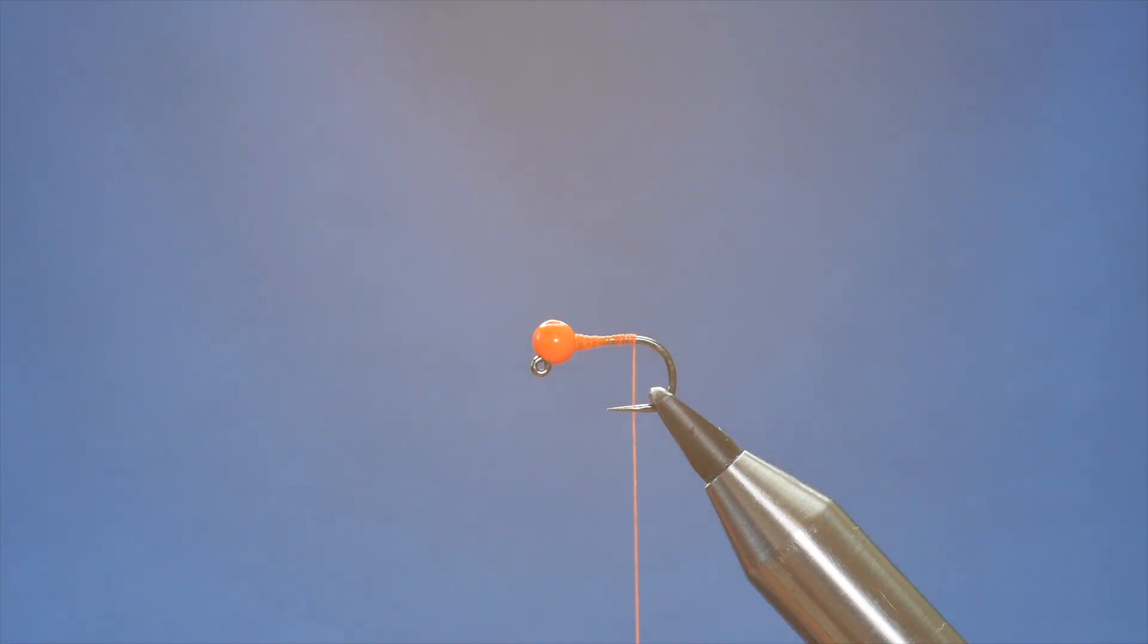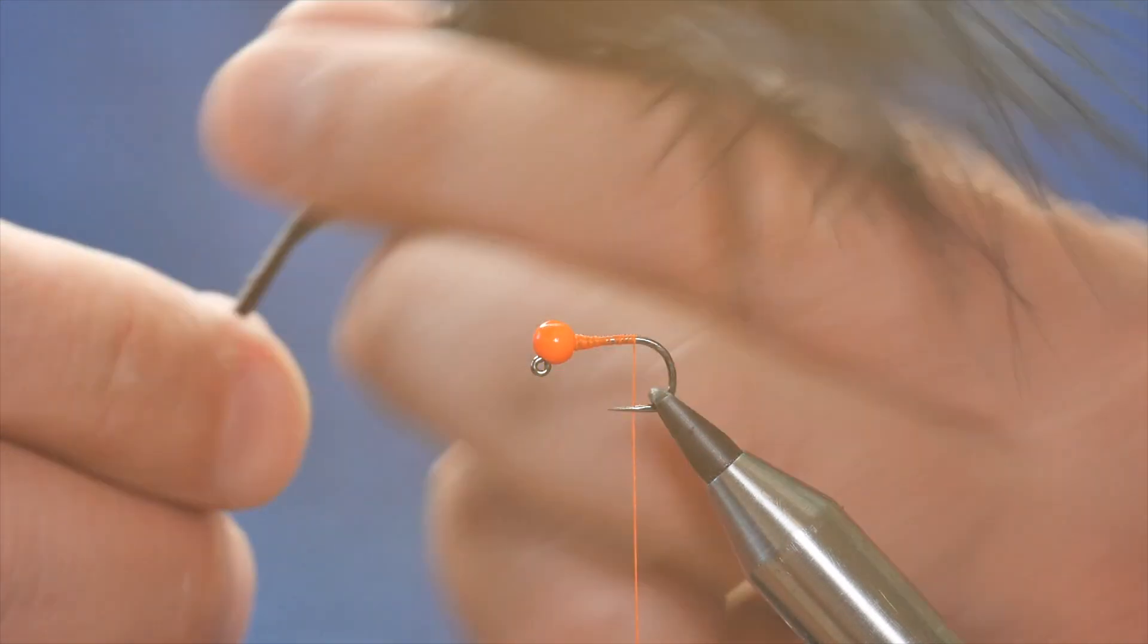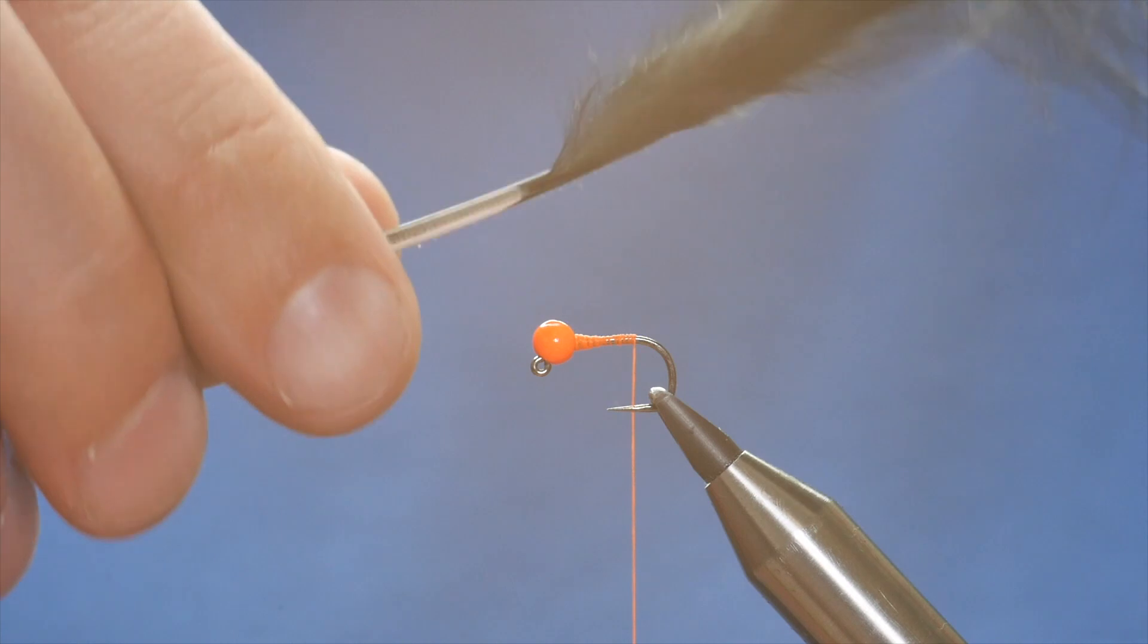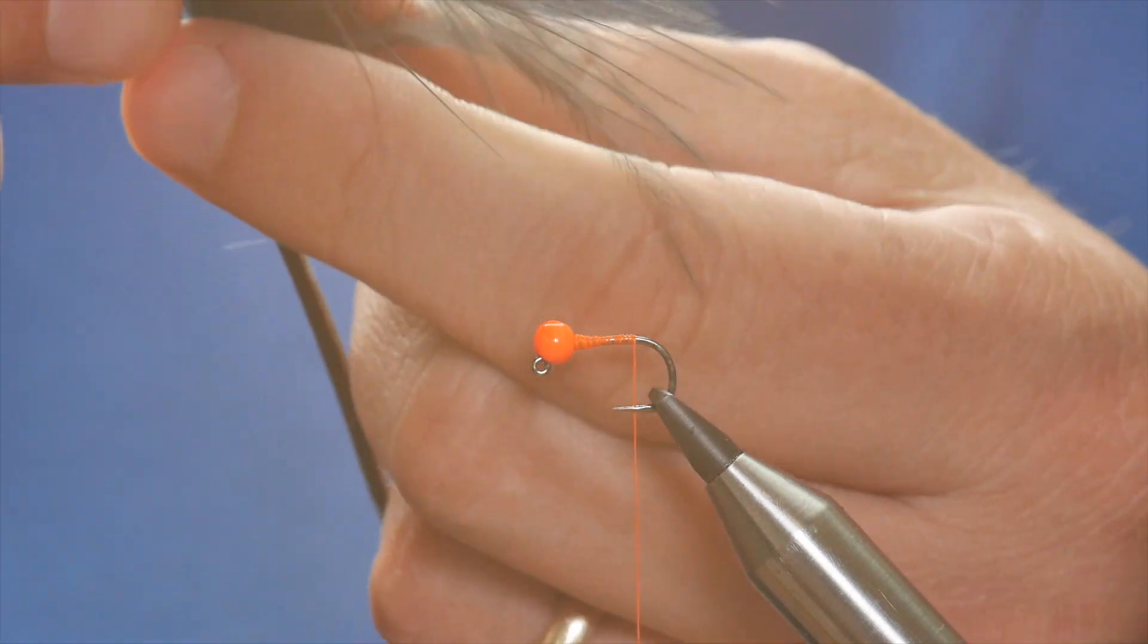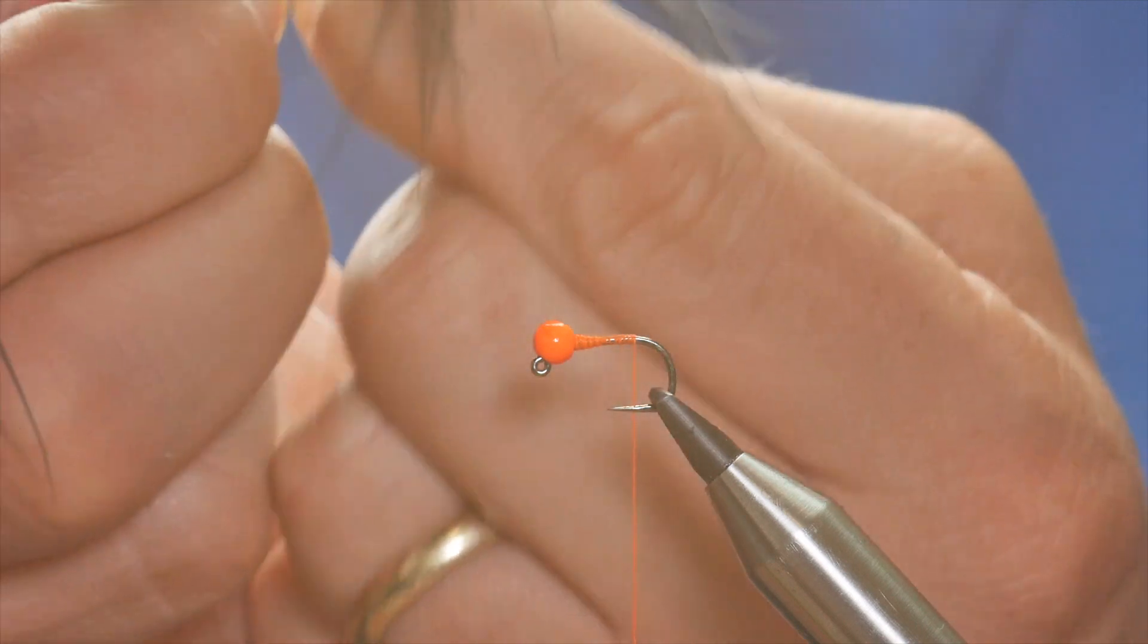For the tail, I'm going to use a little bit of black marabou here, and not a great deal. So I'm going to use my thumb as a guide and I'm going to take about the width of a thumbnail.